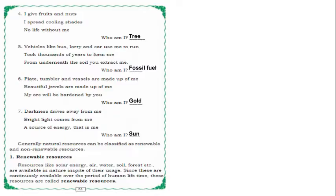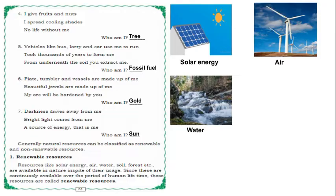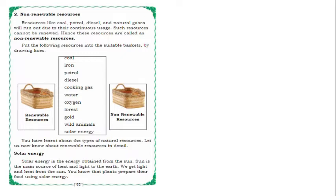We learnt natural resources. We can classify natural resources into two types: renewable resources and non-renewable resources. Renewable resources include solar energy, air, water, soil, forest, etc. These resources are available in nature in spite of their usage. Since they are continuously available over the period of human lifetime, they are called renewable. If you continuously use this type of resource, it will not get exhausted — it will keep on reproducing and renewing.